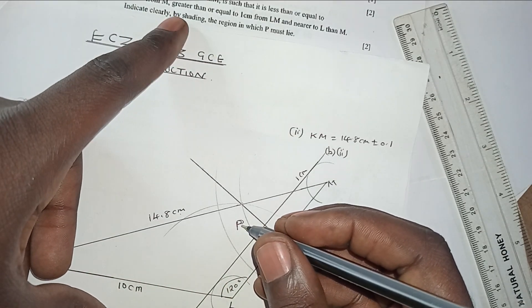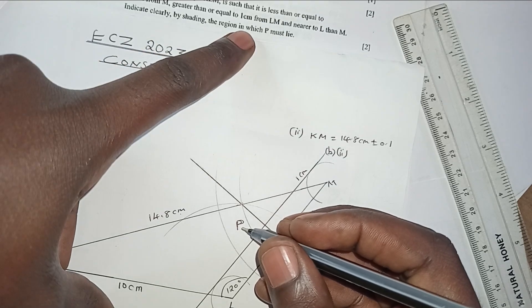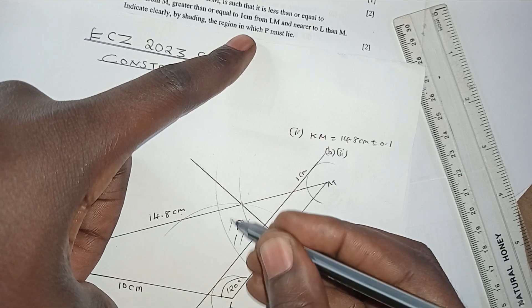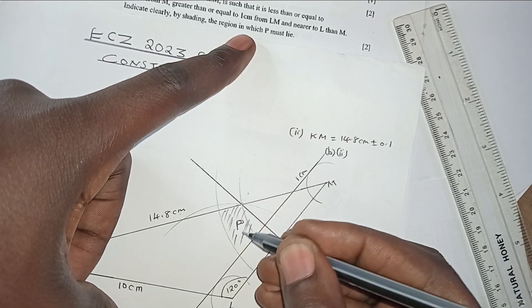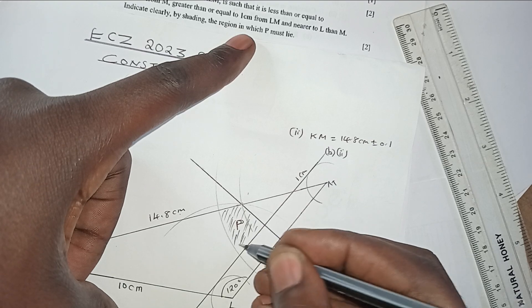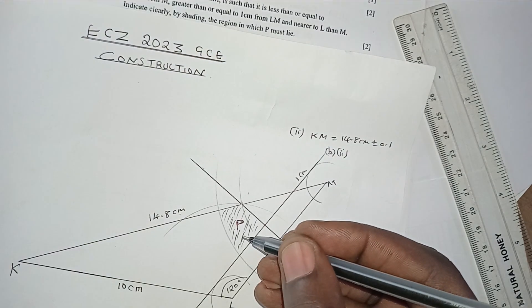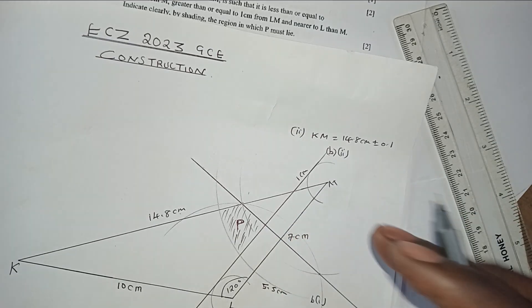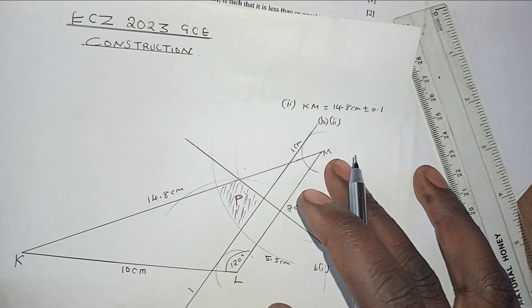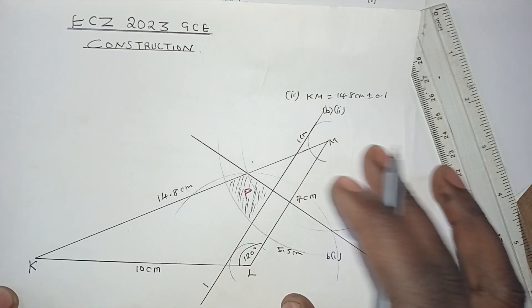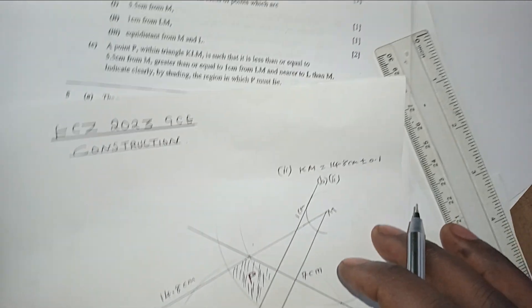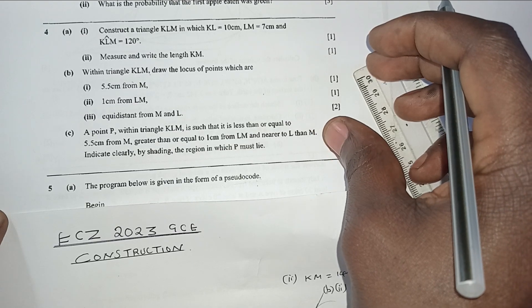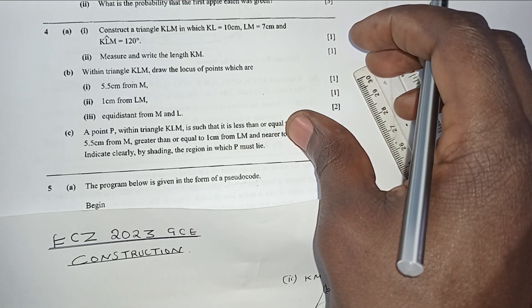We shade the region where point P must lie — the area satisfying all three conditions: within 5.5 cm of M, at least 1 cm from LM, and nearer to L than M. Shade this region clearly as the answer. This is a composite question; make sure you understand all parts.